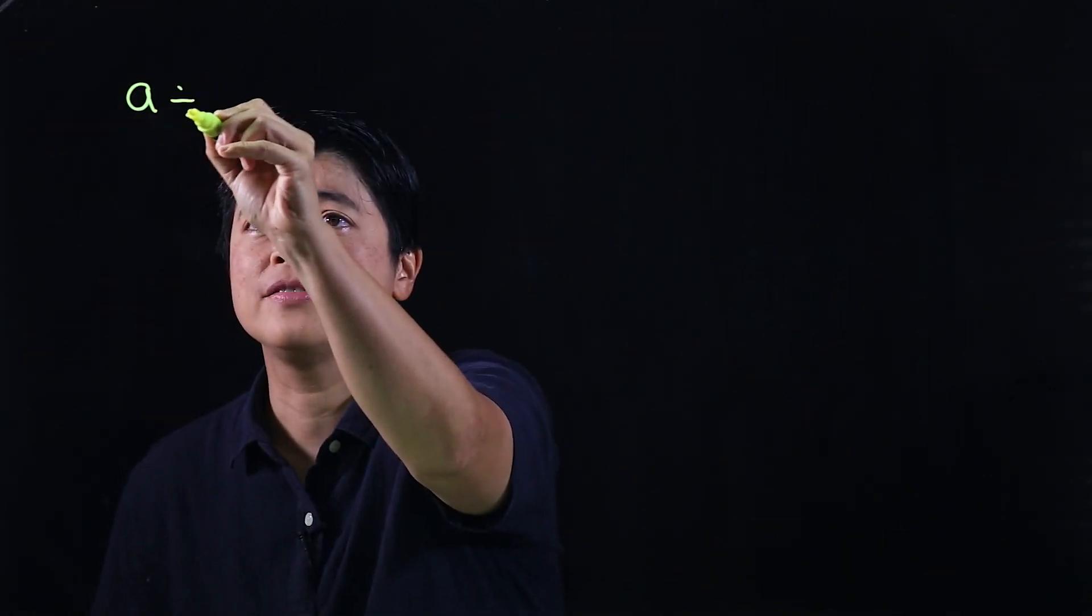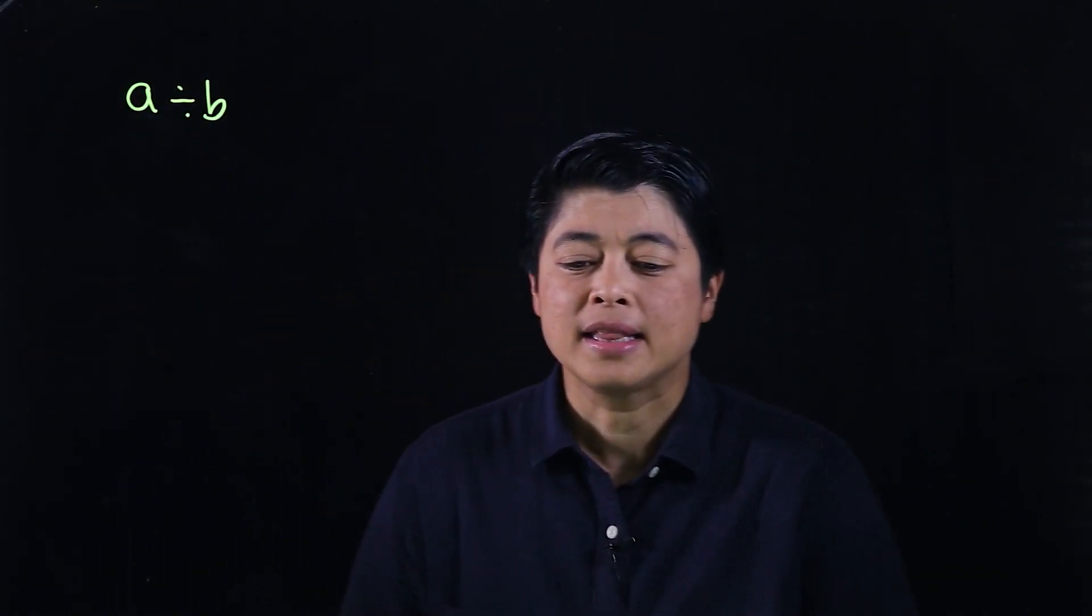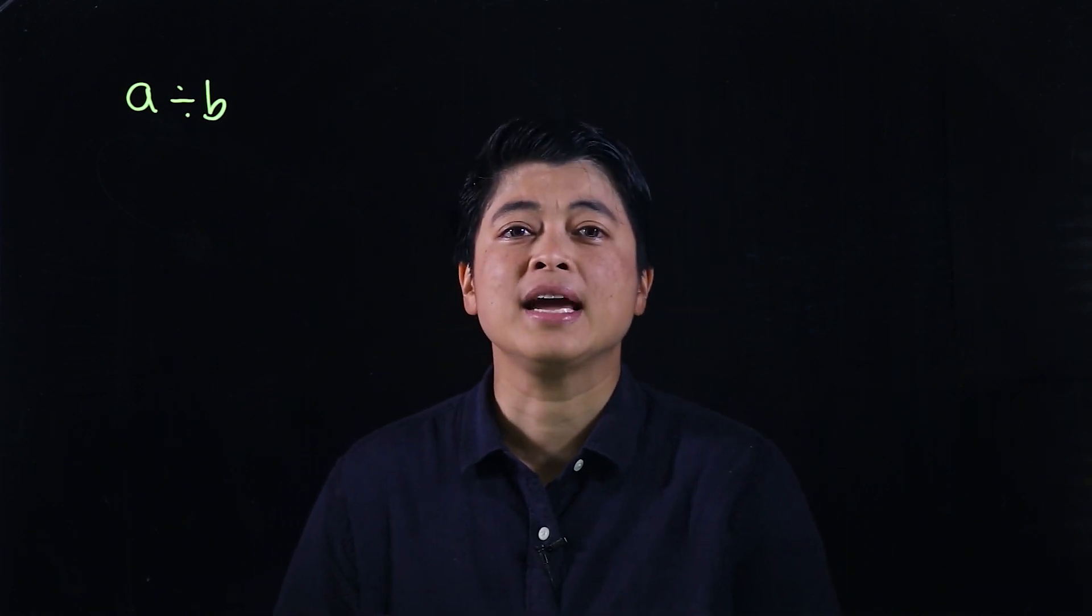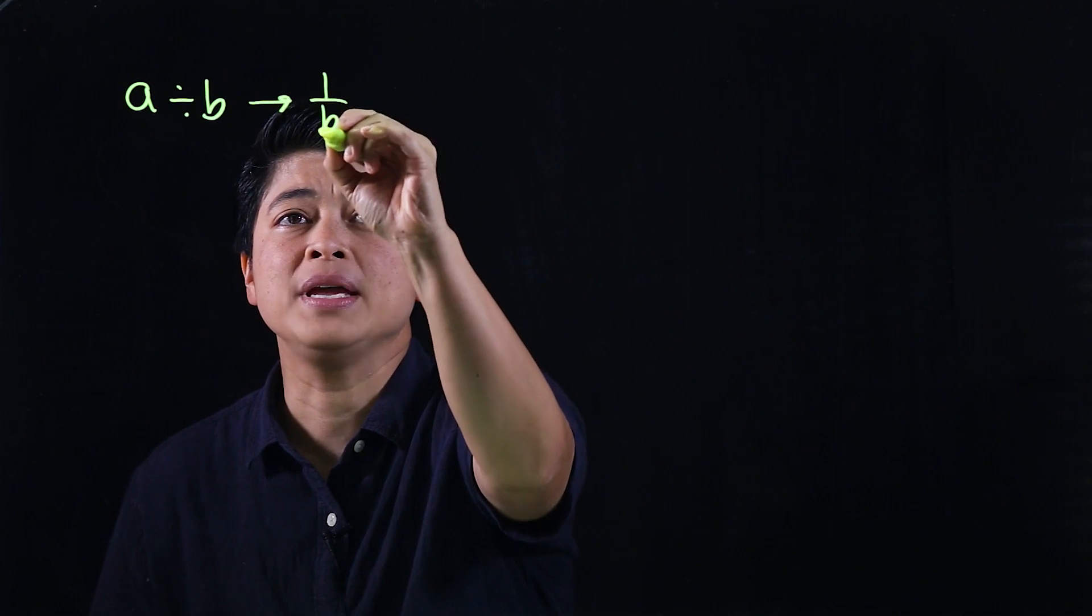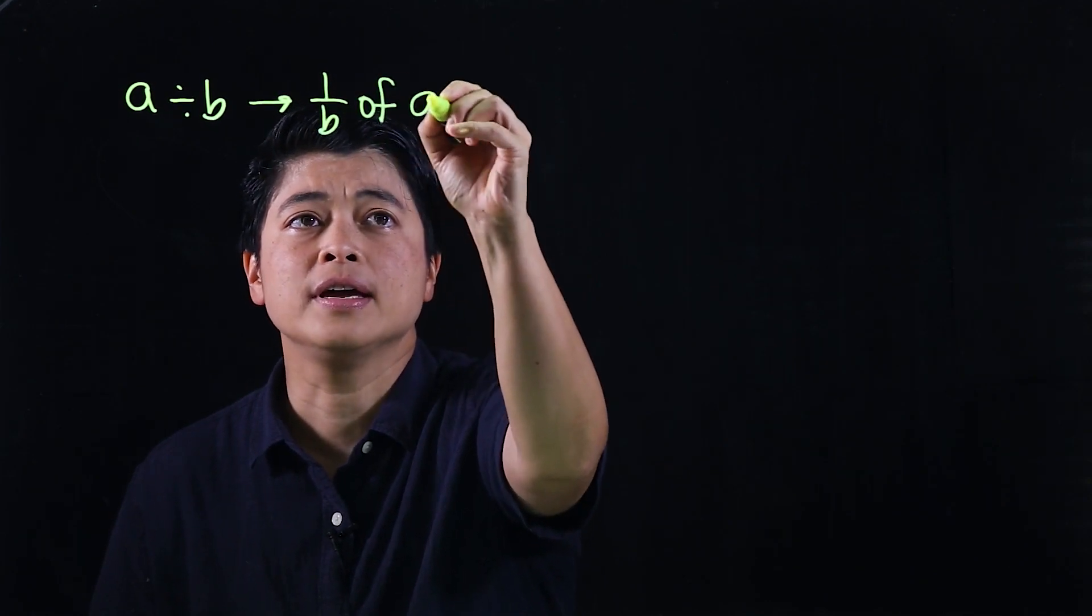Chapter 2 is about fractions. Chapter 2 lesson 1 is about dividing fractions by a whole number. When we say a divided by b, that's technically the same thing as saying 1 over b of a.